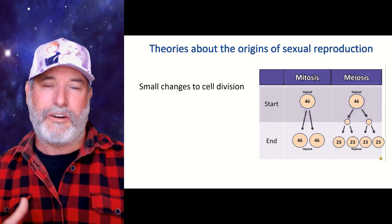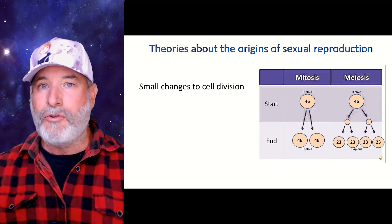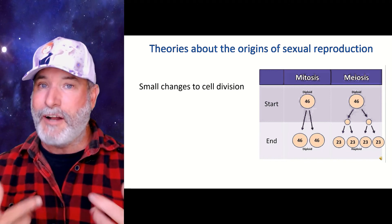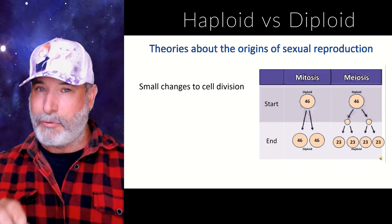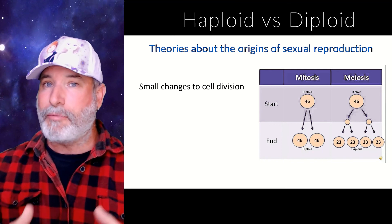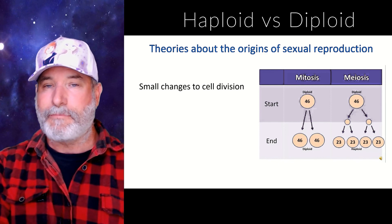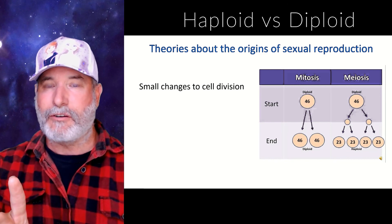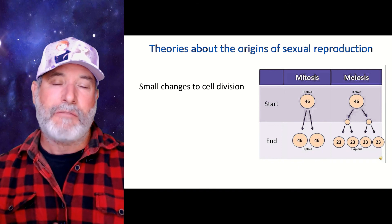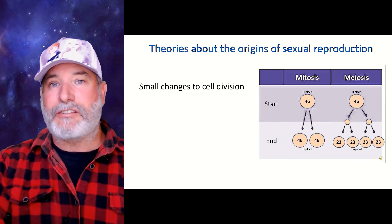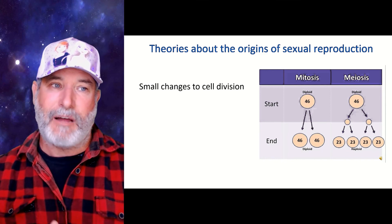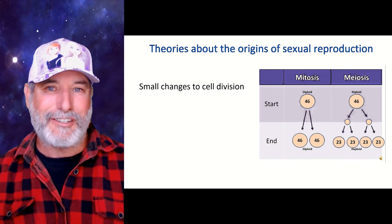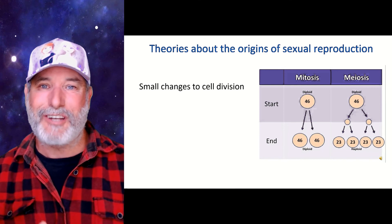Whatever the reason was, eventually sexual reproduction arose and we had to come up with a new way of dividing cells to create haploid gametes. You and I are diploid — 'di' means two, and ploidy has to do with your chromosome number. If you are diploid, you have two copies of your chromosomes — 23 pairs. If you're haploid, you have one copy of the chromosome. Meiosis probably got started as some change in the way that we do mitosis. Stay tuned for the next episode when we talk about meiosis and the generation of haploid gametes for sexual reproduction.